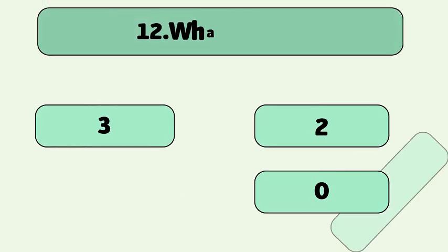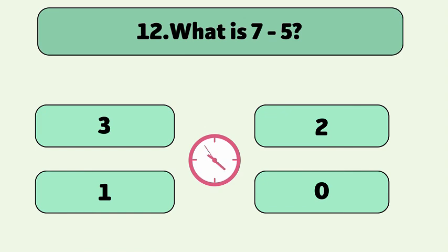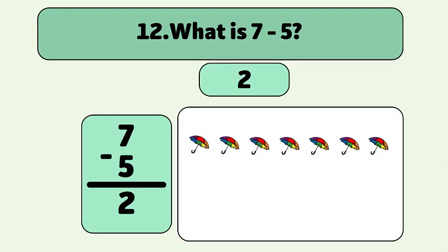What is 7 minus 5? The answer is 2. We start with 7 umbrellas and take away 5. 1, 2, 3, 4, 5. We have 2 umbrellas now.